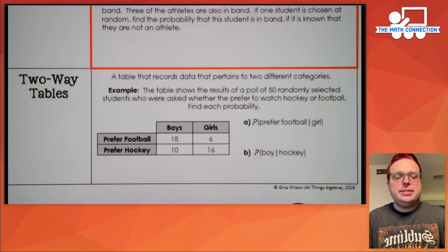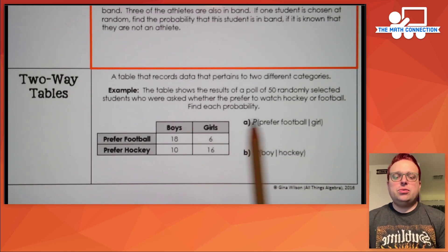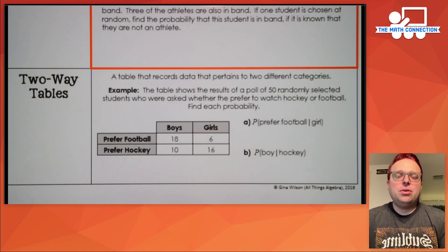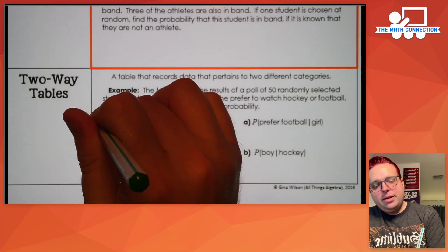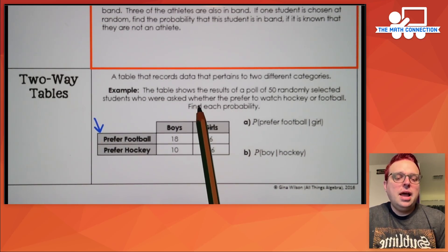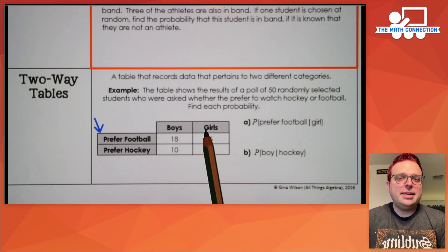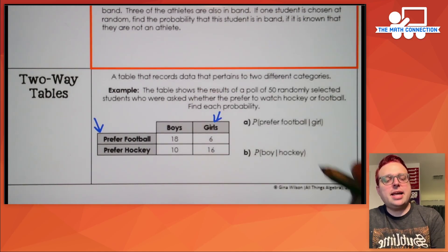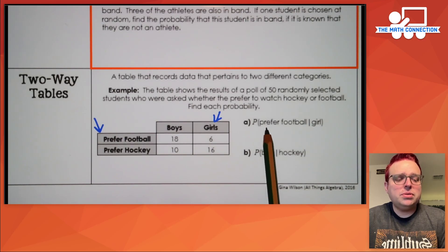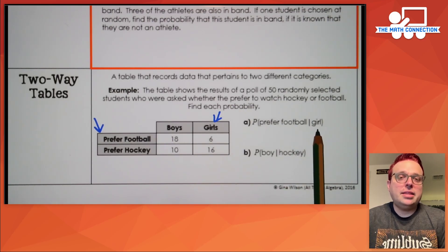The next part of our notes is about two-way tables. It's an easier way to organize all the information you have about a sample set, and we can take probability measurements just by looking at what's in the table. A two-way table compares two categories of data. In the example we're given here, we have sports preference as the first category. We took a poll of 50 randomly selected students and the other category used to break down the data is the gender of the students. What's the probability that a person surveyed would prefer football given that they are female?